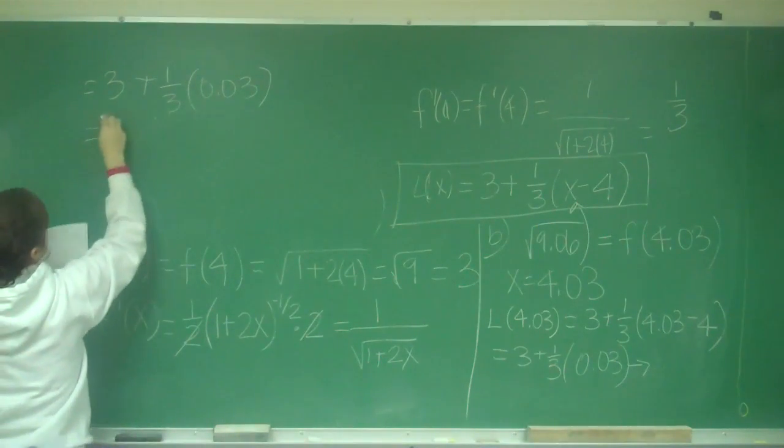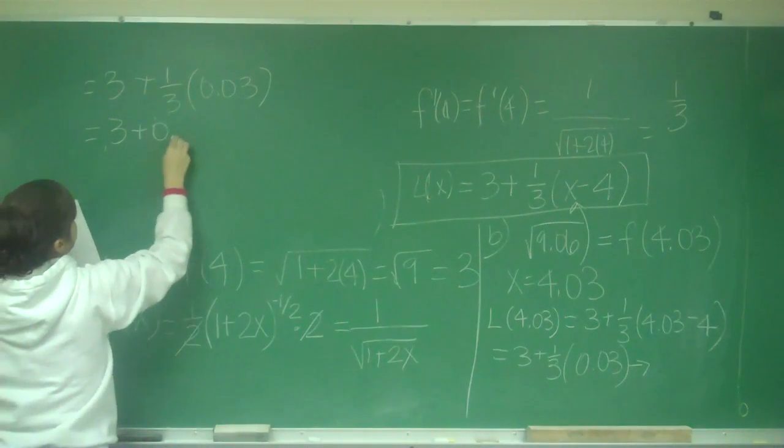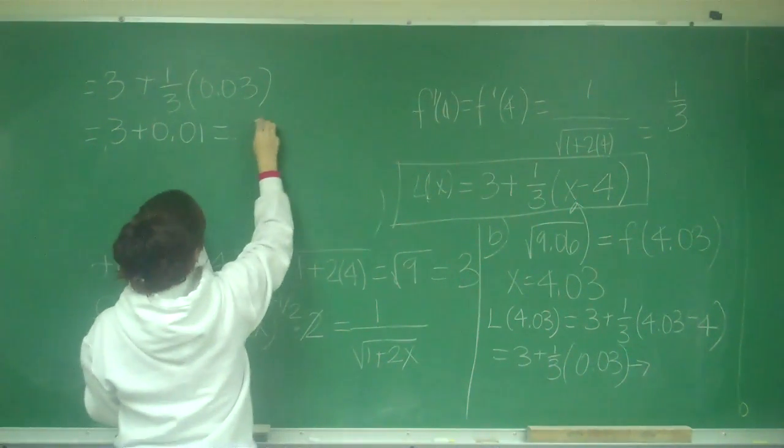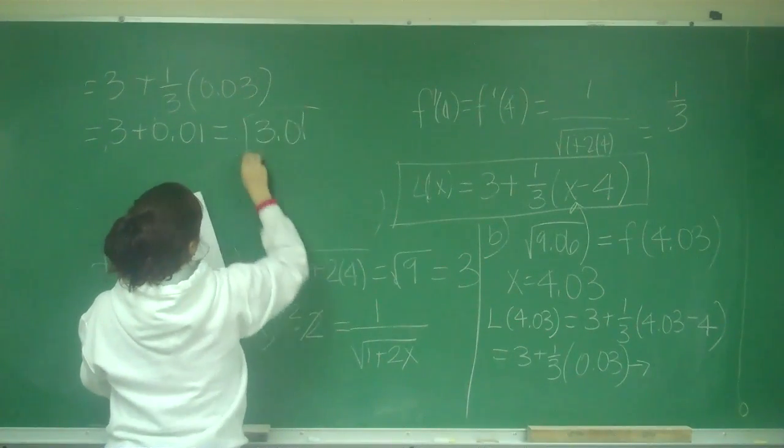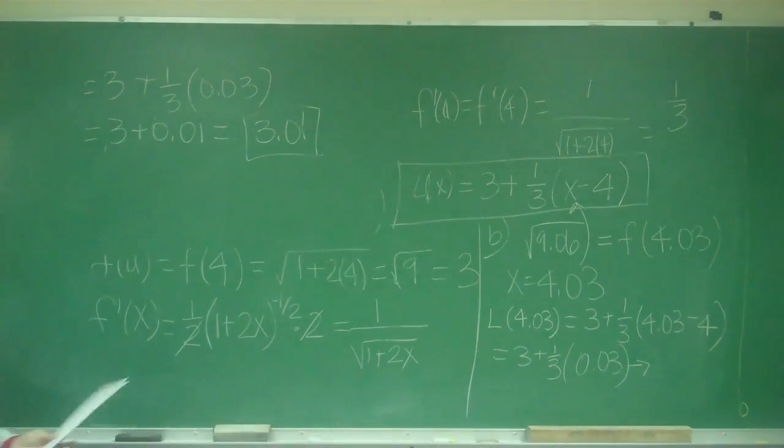So this is 3 plus 0.01, which is equal to 3.01. And that is your answer.